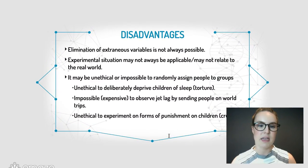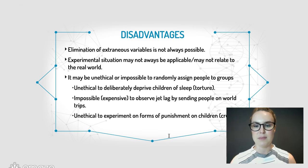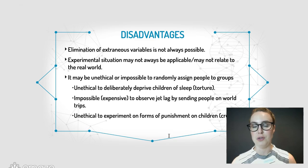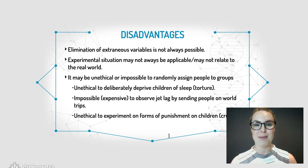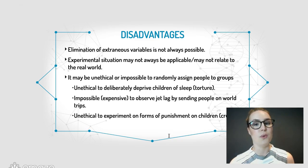Disadvantages include: it's not always possible to eliminate extraneous variables, and it may not always relate to the real world. A significant concern is that it may be unethical or impossible to randomly assign people to groups. For example, it would be unethical to deliberately deprive children of sleep — that's actually a form of torture. It would be too costly to observe jet lag by sending people on extravagant world trips, and it would be unethical to experiment with forms of punishment on children.